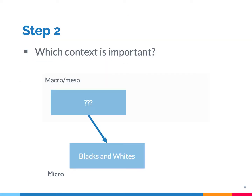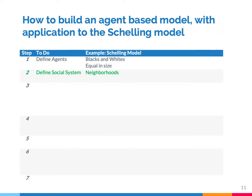In the second step, you need to specify the social environment. Which social context do you think is important for understanding segregation? Schools, maybe, or organizations? You need to make a choice. In the Schelling model, they focused on neighborhoods. So now we have blacks and whites, and they live in neighborhoods.